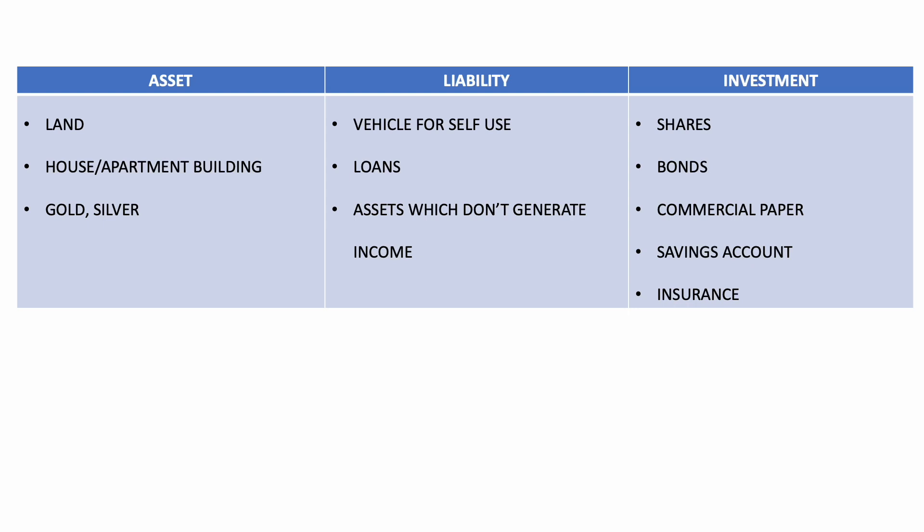An asset is anything which can give you an added value. Land is known to increase its value over time, so land is considered an asset. An apartment building or house that generates income by rent is also considered an asset. Physical metals like gold and silver are also known to increase in value with time, so these are considered assets.